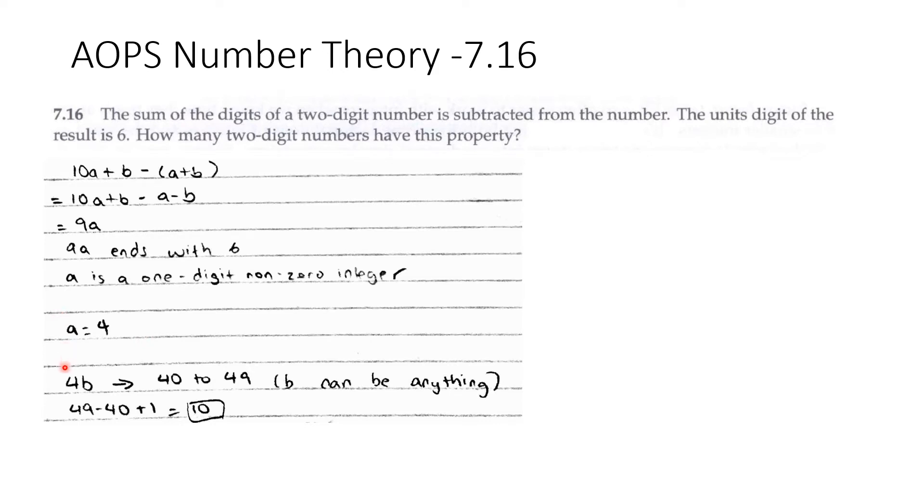So 4b is the number. It's from 40 to 49 where b can be anything. So 49 minus 40 plus 1 is 10.